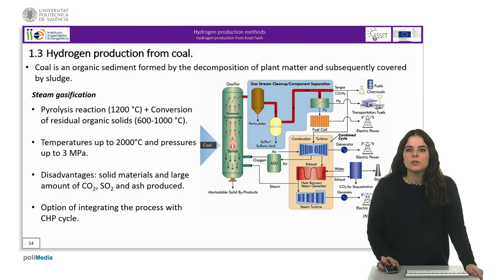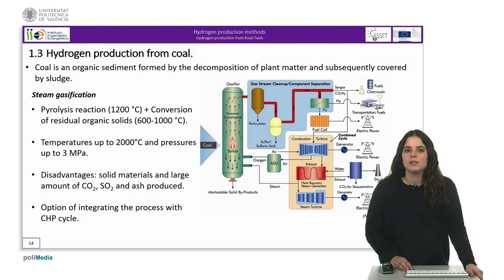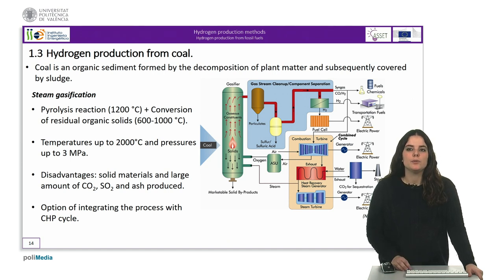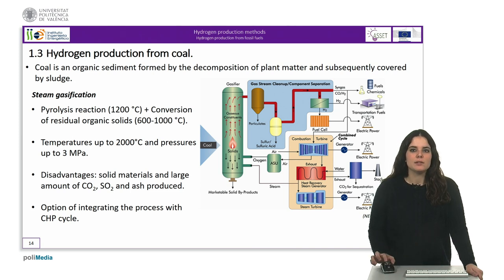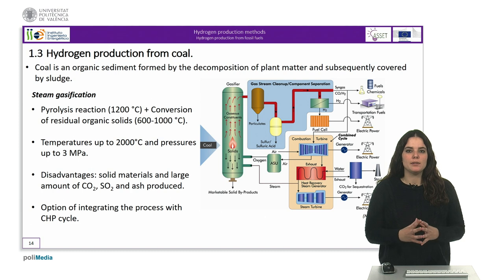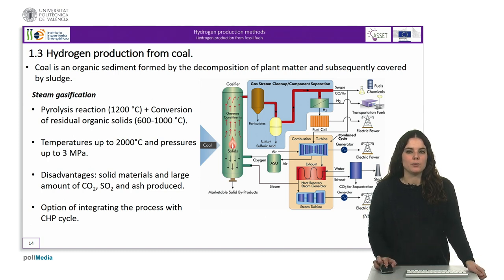We will start talking about the different processes to obtain hydrogen from coal. Coal is an organic sediment initially formed by the decomposition of plant matter from swamps or river deltas, among others. Subsequently, these sediments were covered by shales, and with the passage of time and an increase in pressure and temperature, the molecular structure was altered until carbonization occurred.